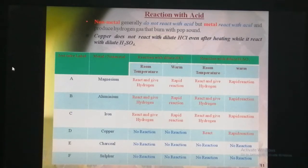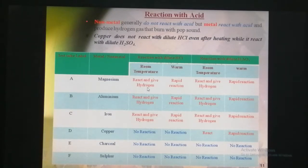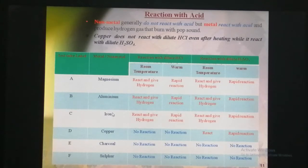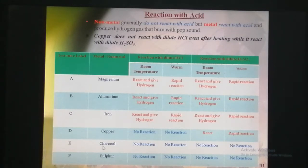We are performing this reaction at room temperature. Magnesium reacts and produces hydrogen at room temperature. Aluminium also reacts and gives hydrogen at room temperature. Iron also reacts with the dilute hydrochloric acid and gives hydrogen gas. Copper does not react with hydrochloric acid at room temperature and does not give hydrogen gas.